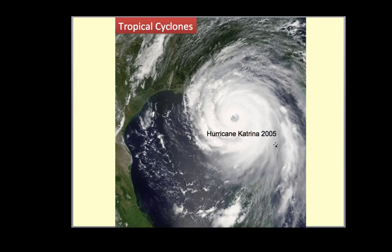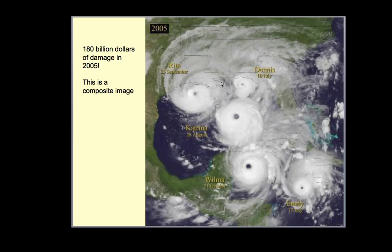Here's looking at Hurricane Katrina in 2005. It's well known this hurricane caused great damages around Louisiana, specifically New Orleans. It was a very expensive and damaging hurricane. 2005 in general was a very active year for tropical cyclones, with $180 billion of damage during that year.